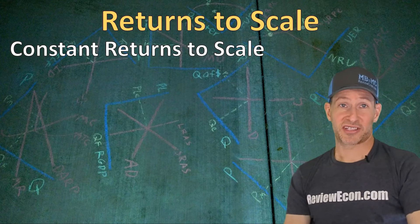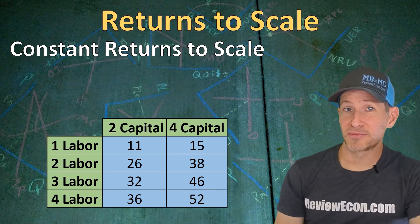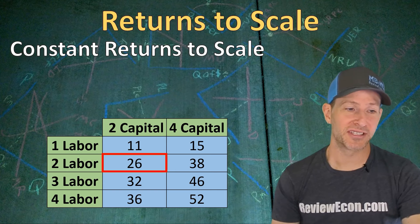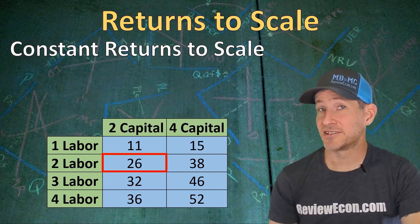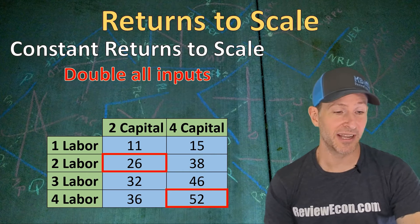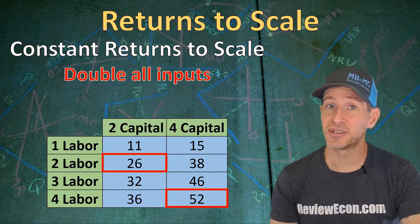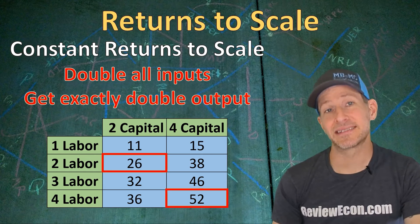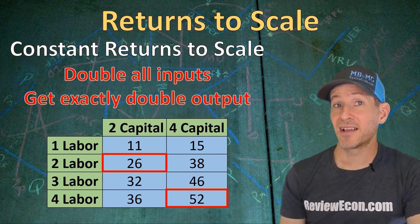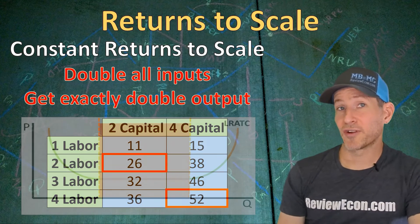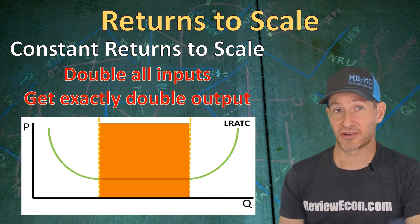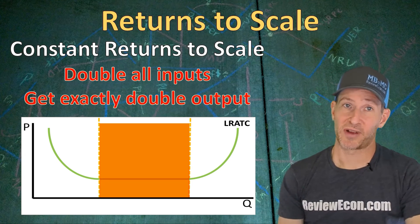We could also see constant returns to scale. At two units of physical capital and two units of labor, a firm has 26 units of output. If we double all of those inputs to four units of capital and four units of labor, we now have 52 units of output. Doubling all the inputs this time gave us exactly double the output — we have scaled up production and gotten the same return on outputs. On the graph, we see that as the constant returns portion of the long run average total cost curve, where average costs are constant in this range.